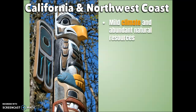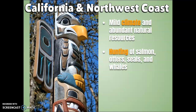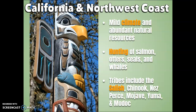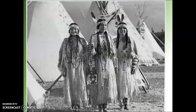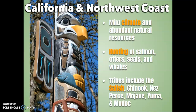Now we have California and the Northwest Coast. These groups lived in a mild climate with abundant natural resources, hunting salmon, otters, seals, and whales. Because they had such an abundance of food, they were able to make things like totem poles and develop a very rich culture. Tribes included the Salish, Chinook, Nez Perce, Mojave, Yakama, and Modoc. The next photo shows some Yakama women dressed in traditional clothing from eastern Washington state — two of them are married, which you can see by their feathers, and one is not. Since they had such a rich culture, they even had a gift-giving feast involving giving away or destroying valuable items to demonstrate their wealth. They also have a very strong connection with the spiritual world. Please look at the slides if you have any questions and turn in the guided notes.